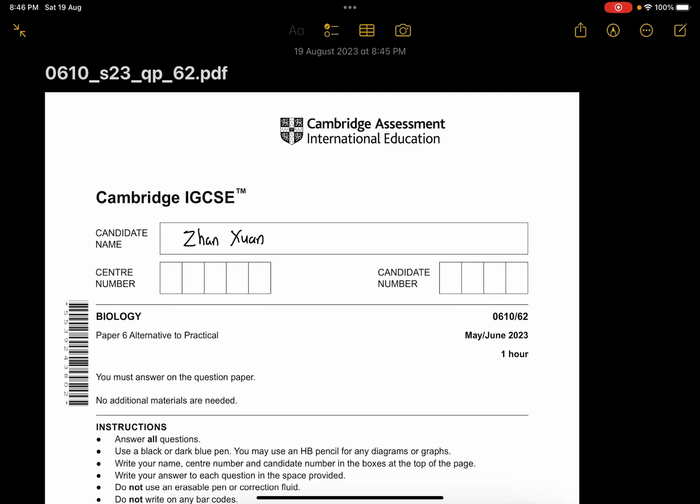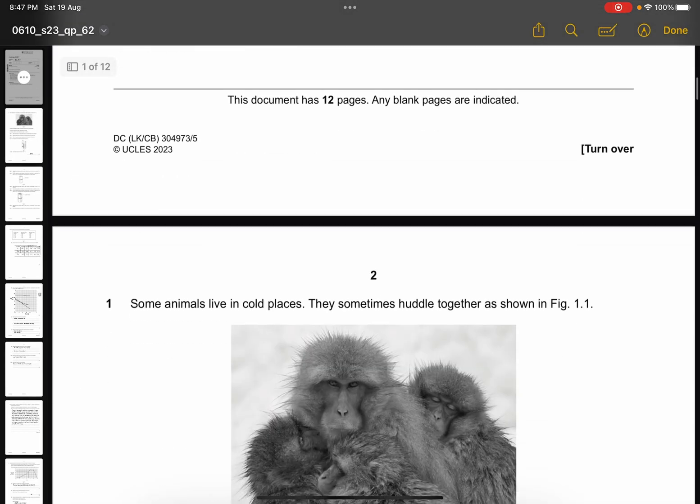Hey guys, welcome back to another new video by Biology with Zhang Shen. So today we are going to do the 0610-62 May-June 2023, the paper 6 alternative to practical paper. This is the paper 6 that I have done during my June 2023 series and the link of this paper is in the description box below. Let's start off by looking at the answers.